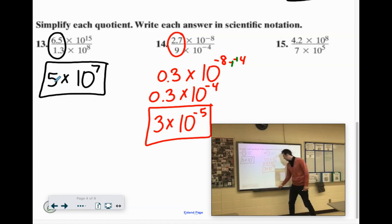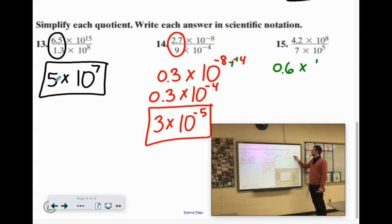And over here, 4.2 divided by 7 is going to be 0.6. We need to subtract the exponents. 8 minus 5 is 3. Doesn't work for scientific notation, because 0.6 is less than 1. So we need to make it larger. We need to make the exponent smaller.